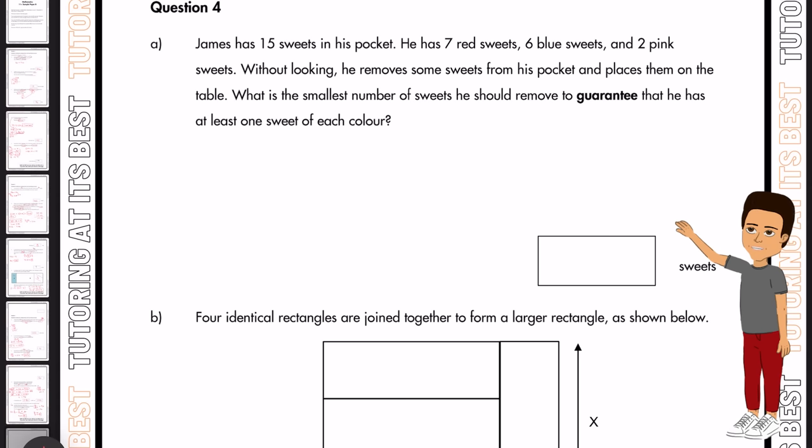I understand it could slightly come across as a trick question, but the answer would be 14. And the reason we get 14 is because we're looking for the smallest number of sweets he should remove. And because we have two pink, we want to have at least one sweet of each color. So by removing one from pink, that gives us seven, six and one, which gives us 14 in total. And there we are.